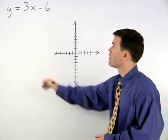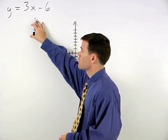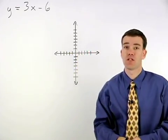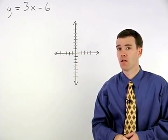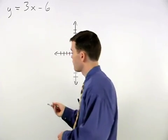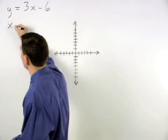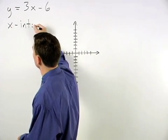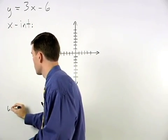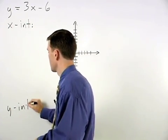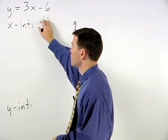If we're asked to graph the line y equals 3x minus 6 using the intercept method, we start by finding the x-intercept and y-intercept for our given line.